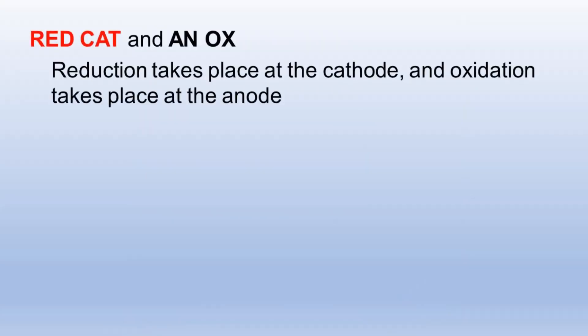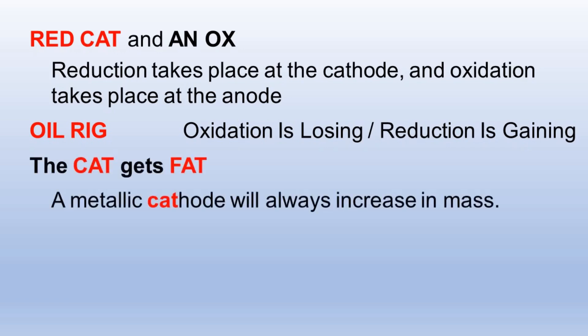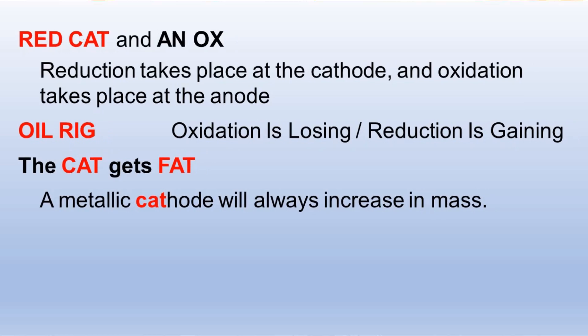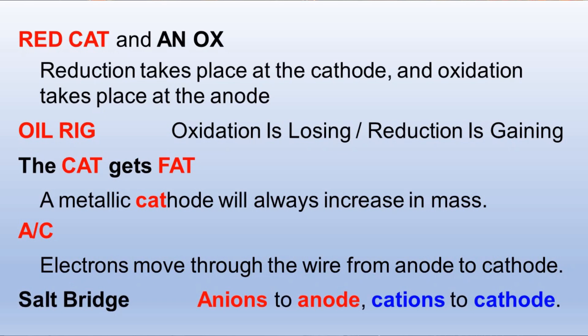Here are some mnemonic aids to help keep all this straight. 'Red cat and an ox': reduction takes place at the cathode and oxidation takes place at the anode. 'OIL RIG': oxidation is losing electrons and reduction is gaining electrons. 'The cat gets fat': with metallic electrodes, the cathode always increases in mass. 'AC' (as in air conditioning): electrons flow through the wire from anode to cathode. And at the salt bridge, anions flow toward the anode and cations flow toward the cathode. You have to know all of that.